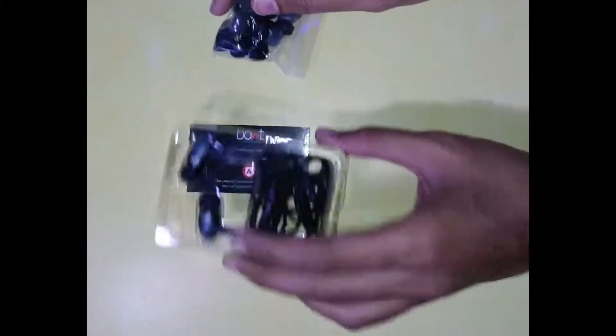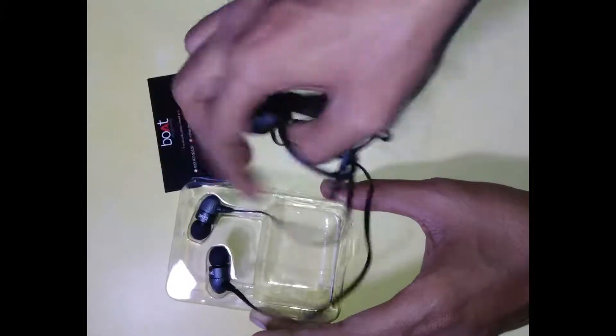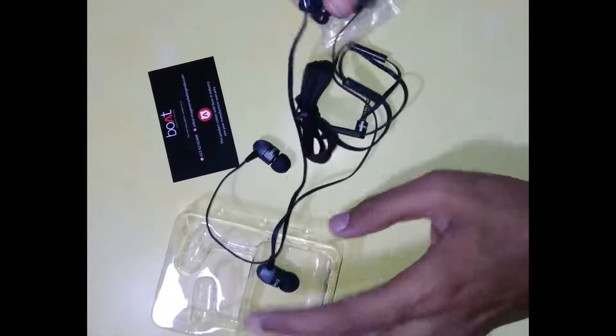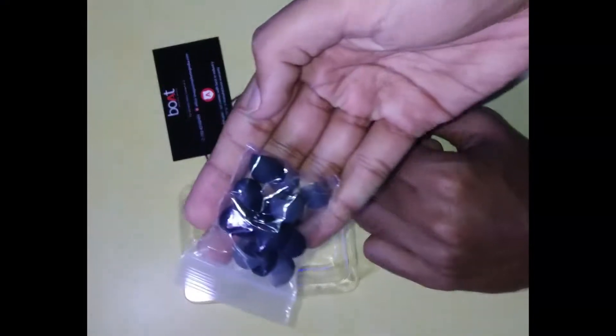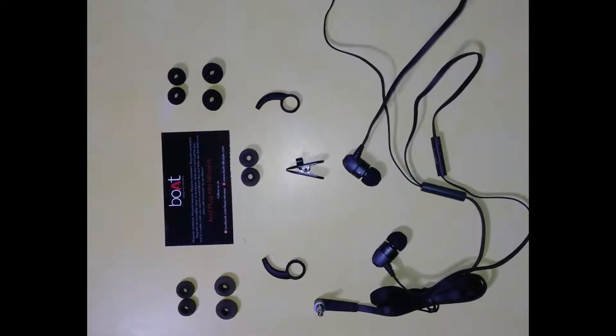Inside the box there is a plastic case which is holding all the things neatly together. Inside the plastic case there are the Boat headphones themselves, the warranty card, and there are six different types of earbuds coming along with the headphones.